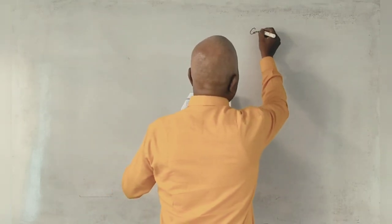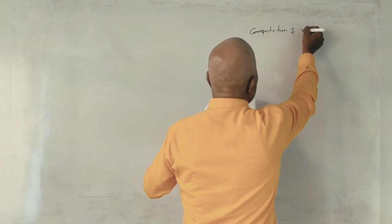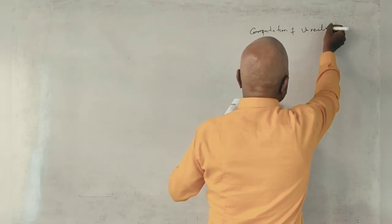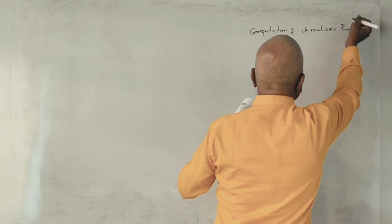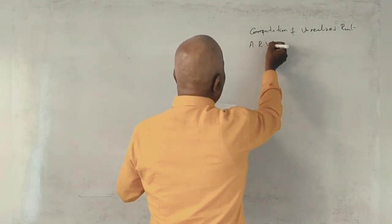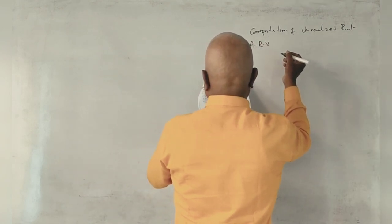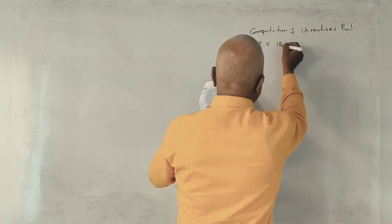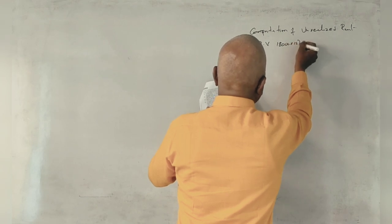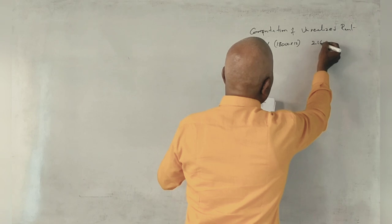So computation of unrealized rent. First of all, annual rental value, annual rental value: 18,000 per month, 12 months, equals 2,16,000.